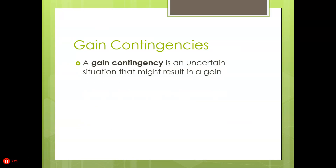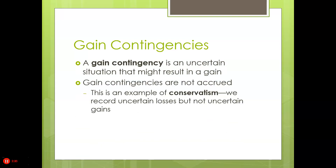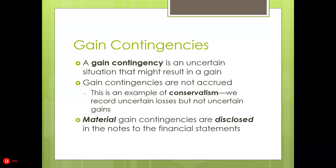What about a gain contingency? A gain contingency is an uncertain situation that might result in a gain. Gain contingencies are not accrued — this is an example of conservatism. We record uncertain losses, but not uncertain gains. But if we're pretty sure, material gain contingencies are disclosed in the notes or footnotes.